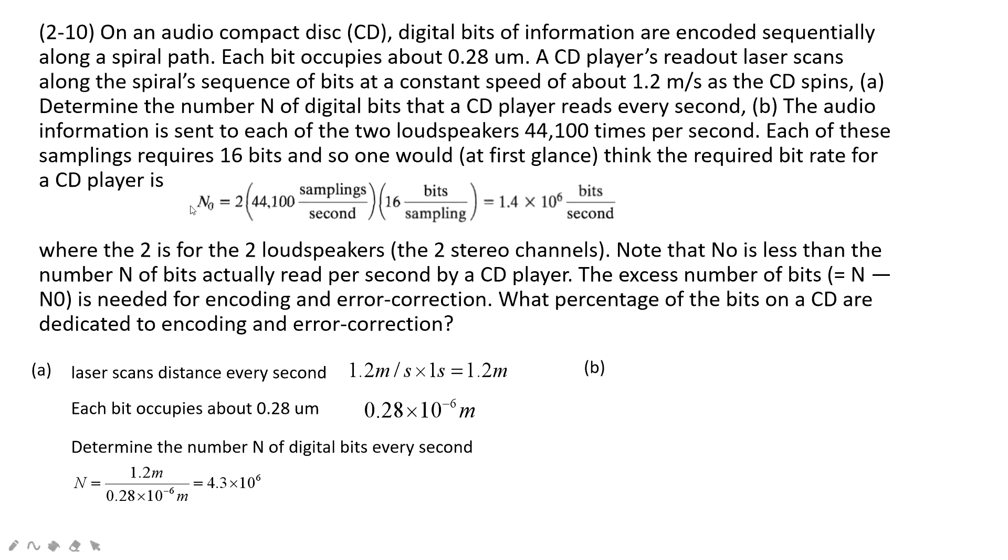The n0 tells us it's a constant: 1.4 times 10 to the power 6 bytes per second. So now we can do that. Error correction is using n minus n0 divided by n. And we do the calculation: 67 percent.